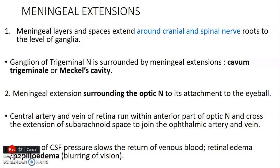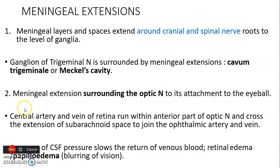The second meningeal extension: the meninges follow the optic nerve into the eyeball. The optic nerve contains the central artery and vein of the retina. When intracranial pressure is raised and CSF pressure is high, it can follow these meningeal extensions along the optic nerve, compressing the central artery and vein within it, resulting in blurring of vision.